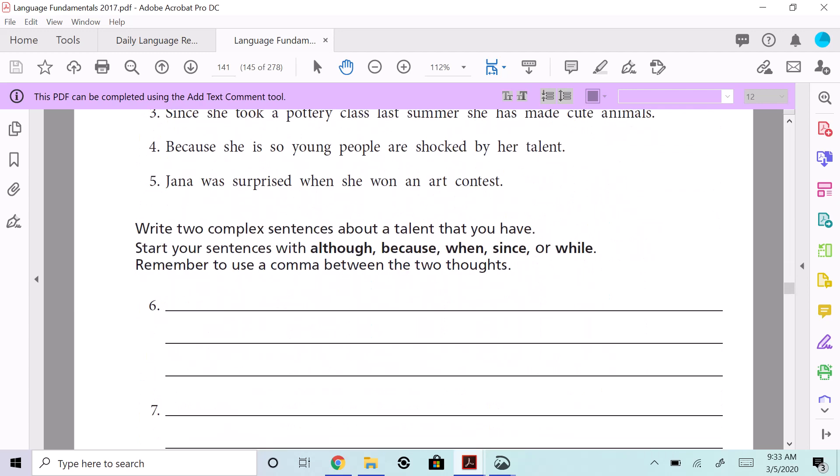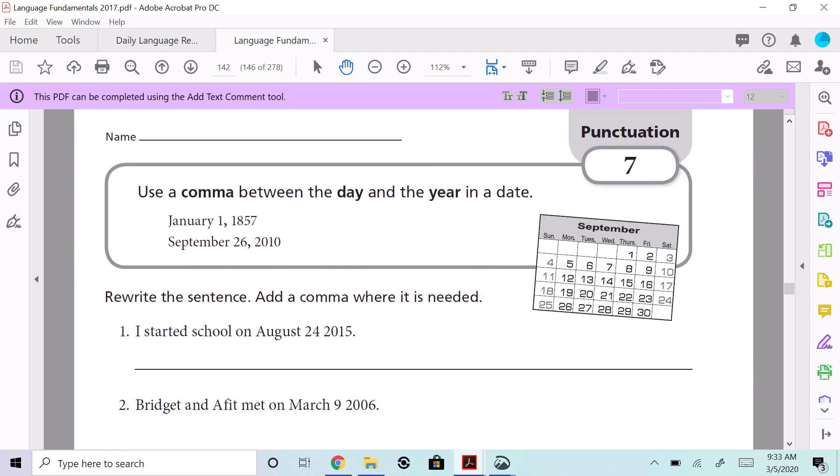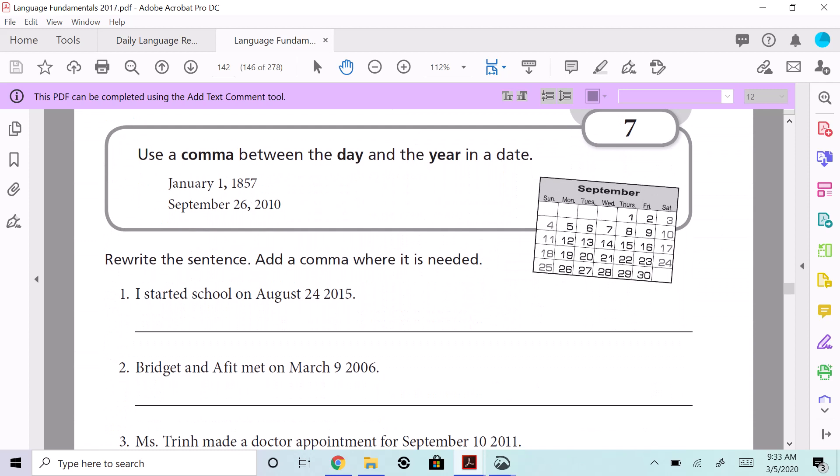...with one of those. Capisce? All right. Let's look at number seven. Use a comma between the date and the year. Oh my gosh, we do this all the time, right? The day and the year. January 1st—the day is the first—comma.